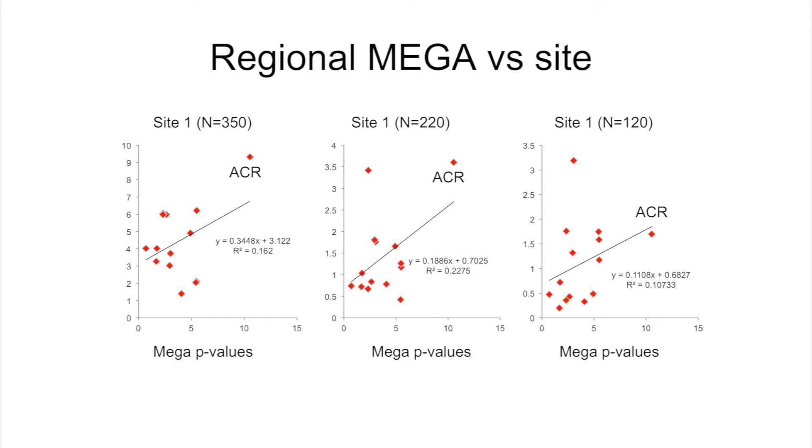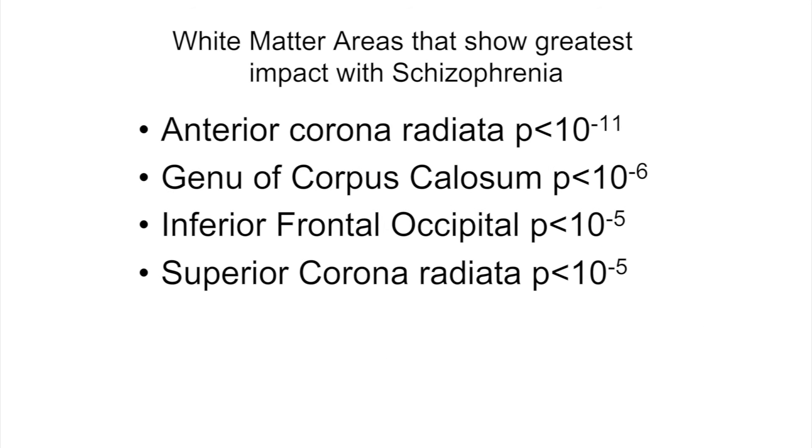And regional mega analysis versus the site, we now see that all three sites show about the same pattern of correlation, where the ACR pops out as the most significant finding across the sites.